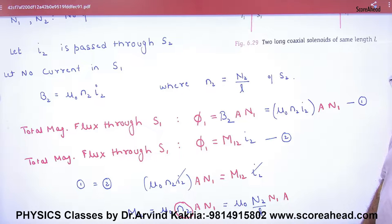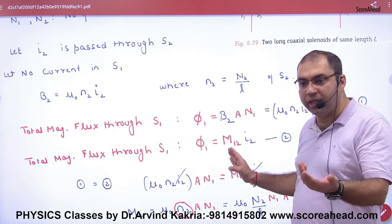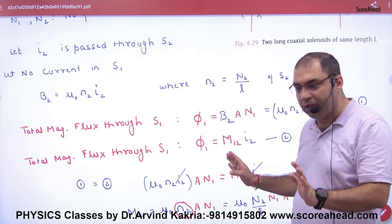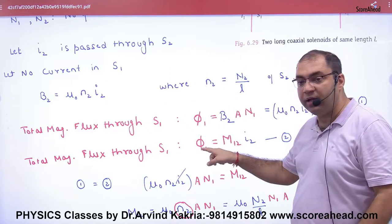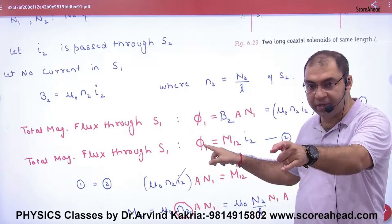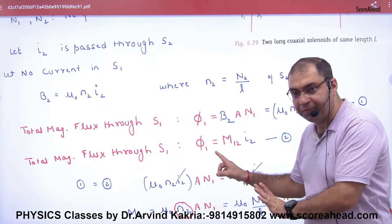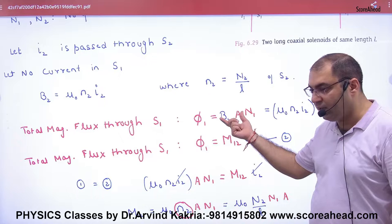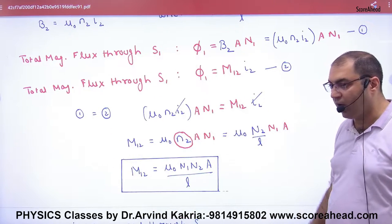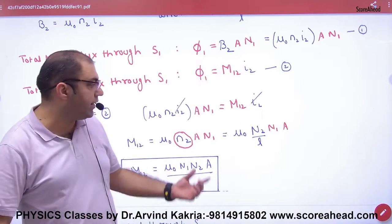Now Henry says: total flux of secondary equals M into I. He says mutual inductance is M, and I is I2 — the current in the primary. So current is of primary, flux change is of secondary. We are calculating flux in two ways — once the old way, once this way. Equating both, I2 cancels, and what remains is the formula for mutual inductance M.